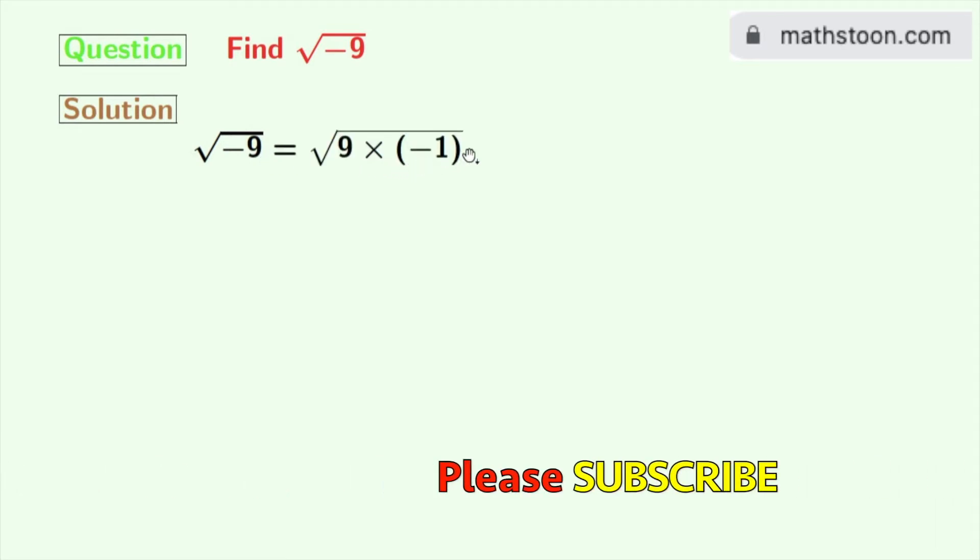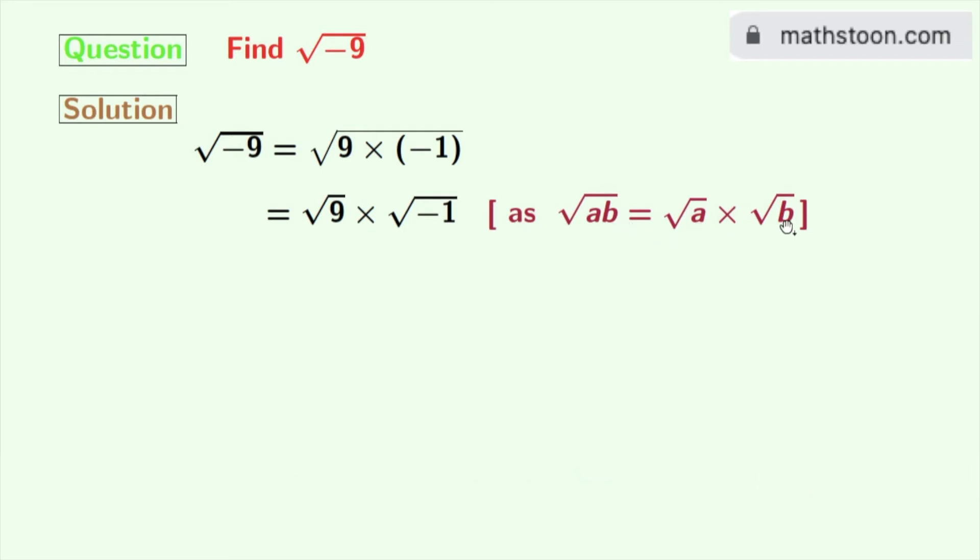Now again we will rewrite this as square root of 9 times square root of minus 1, as we know that square root of ab is equal to square root of a times square root of b.